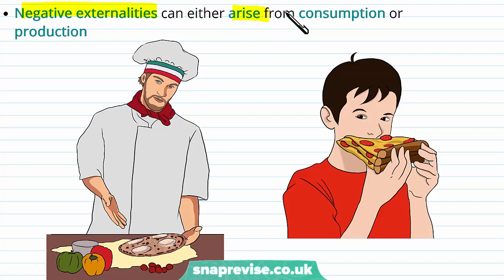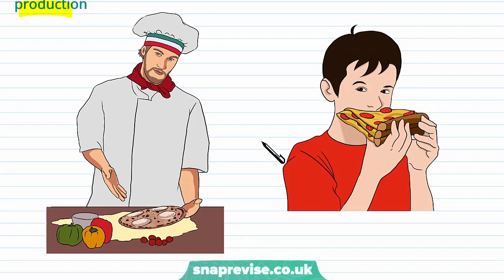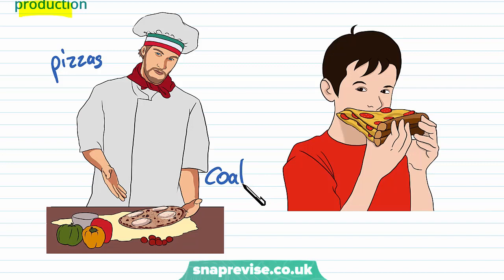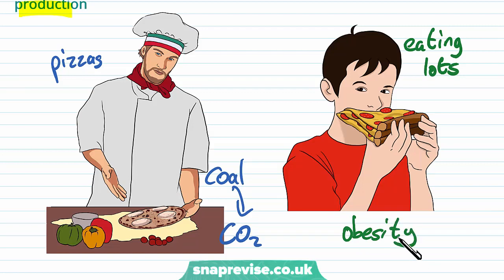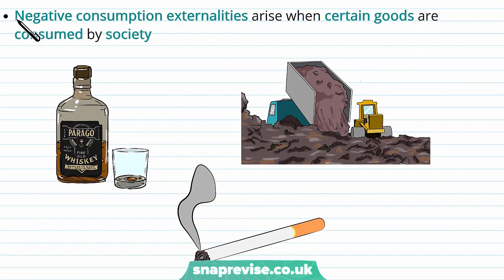Negative externalities can arise from consumption or production. In the production of pizza, for example, using coal to cook in coal-fired ovens increases CO2 emissions, which isn't great for the environment. On the consumption side, eating a lot of pizza creates negative externalities such as the health costs of obesity and unhealthy eating.